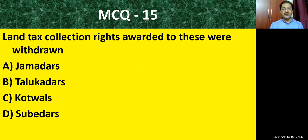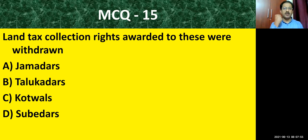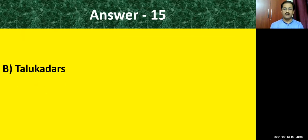Question number fifteen: land tax collection rights were awarded to certain people but then withdrawn. From whom were the rights withdrawn? Options: Jamadars, Talukdars, Tokottwal, Subedars. The appointed people were collecting the land revenue and handing it over to the British, but that right was withdrawn. The correct answer is Talukdars.